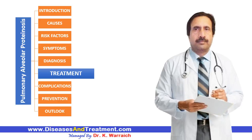If your entire lung needs to be cleaned, they will use a procedure called whole lung lavage. In this procedure, lung specialists will fill one of your lungs with saline and drain it while keeping your other lung ventilated. One wash may be enough to clear your symptoms, but you will most likely need multiple treatments. Your doctor may also prescribe blood-stimulating medications — a newer treatment that has improved symptoms for some people. As a last resort, they may recommend a lung transplant if medications and lung washing don't work.